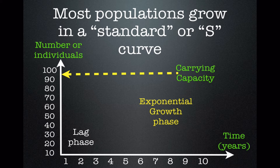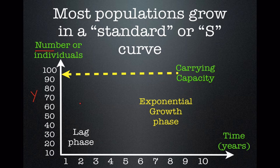Populations increase over time — they tend to grow. As things reproduce, they produce more and more individuals, so they're going to grow. And this pattern of growth can be graphed. If we put the number of individuals on the y-axis and time on the x-axis, we can produce a graph of how a population's numbers or growth changes.